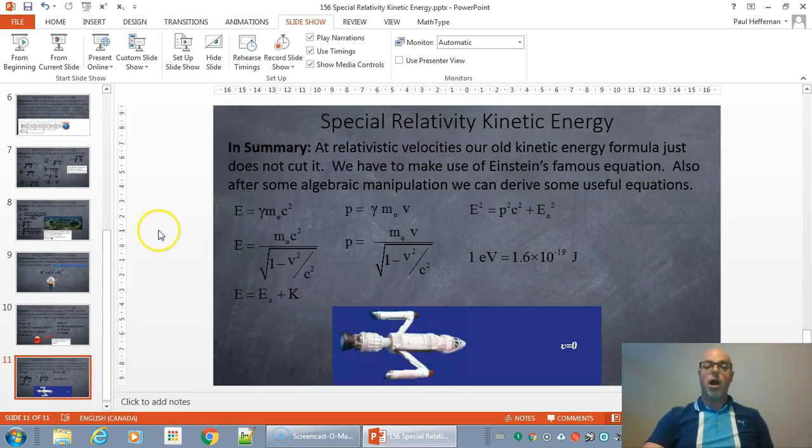So at relativistic velocities, our old kinetic energy formula just doesn't cut it. Can't use K equals ½mv² anymore. We have to make use of Einstein's most famous equation, E equals mc squared. And with some algebraic manipulation, we can derive some other useful equations like E² = (pc)² + (m₀c²)². And don't forget the useful unit, the electron volt. I hope this helps. Thank you.